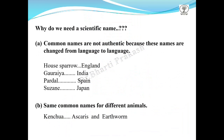Why is there a need for a scientific name? We see that common names are not authentic; these names change from language to language, from area to area, and from country to country. For example, the common house sparrow is called so in England, but in India we call it Goraya, in Spain we call it Padal, and in Japan they call it Susan.